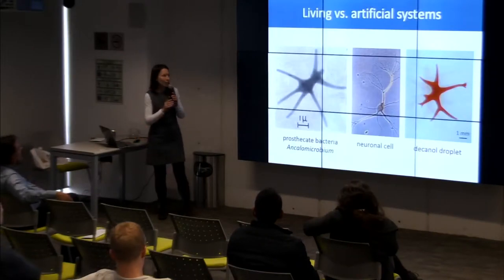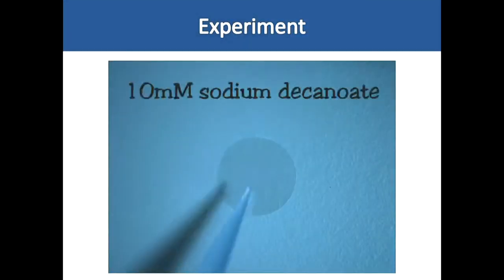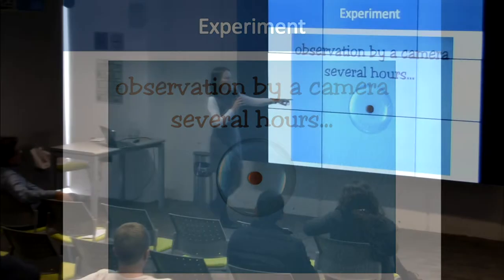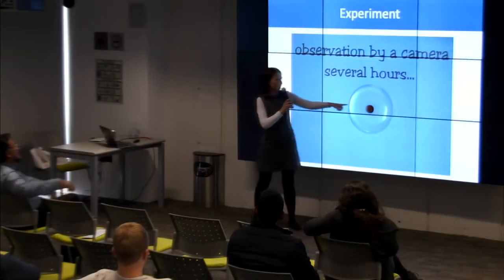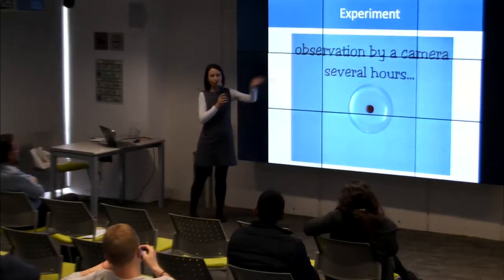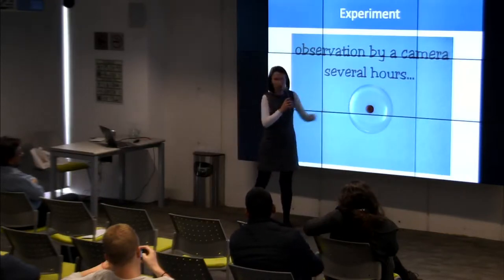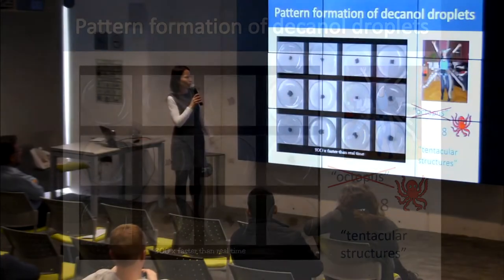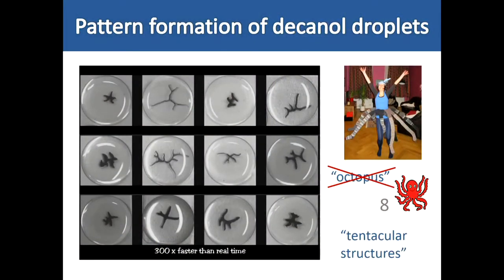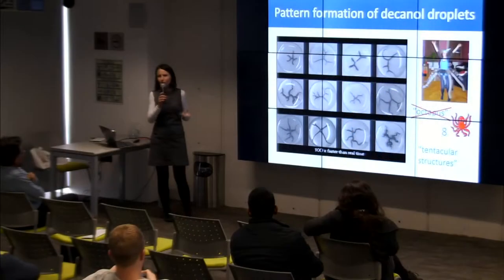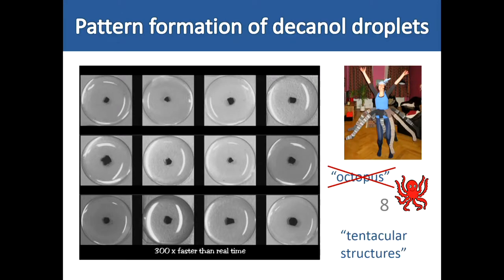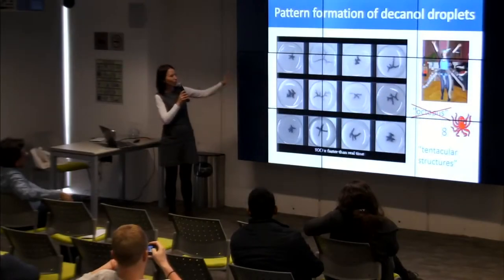The experiments I did are again very simple. I have a glass slide with a diameter of 18 millimeters, then I add the aqueous solution of sodium decanoate, a decanol droplet, and salt. I observe the system over time as the water evaporates. What I can see are very interesting shape changes. At the beginning I started to call them 'octopus', but an octopus always has eight arms and my droplets have various numbers of arms, so in my talk I will speak about tentacular structures.